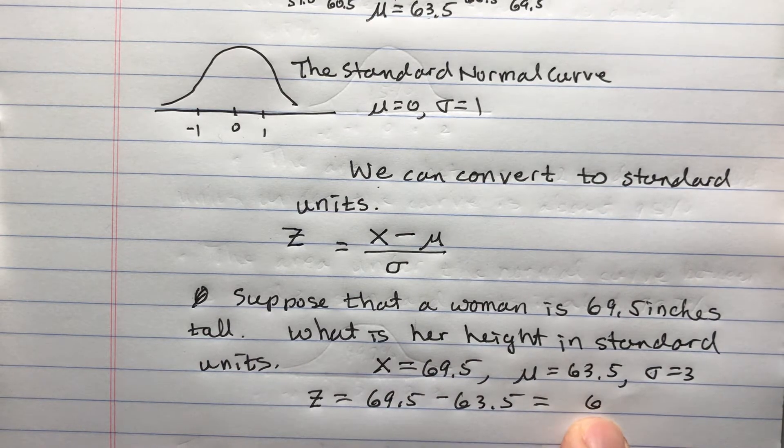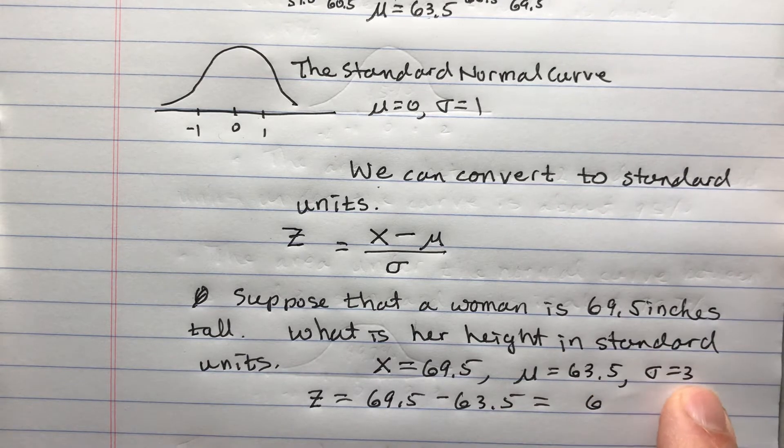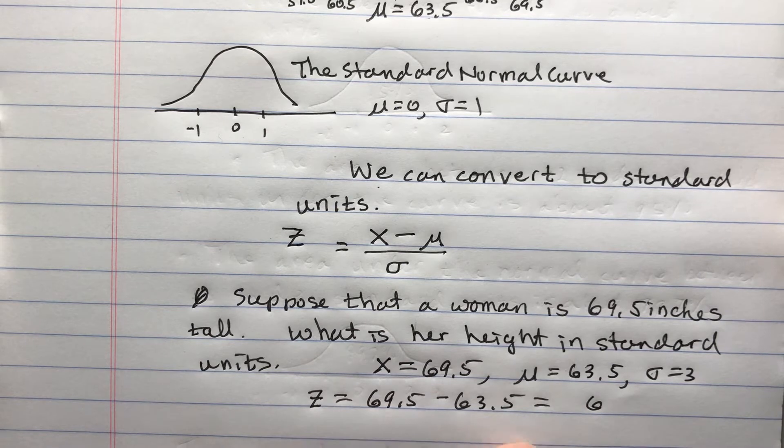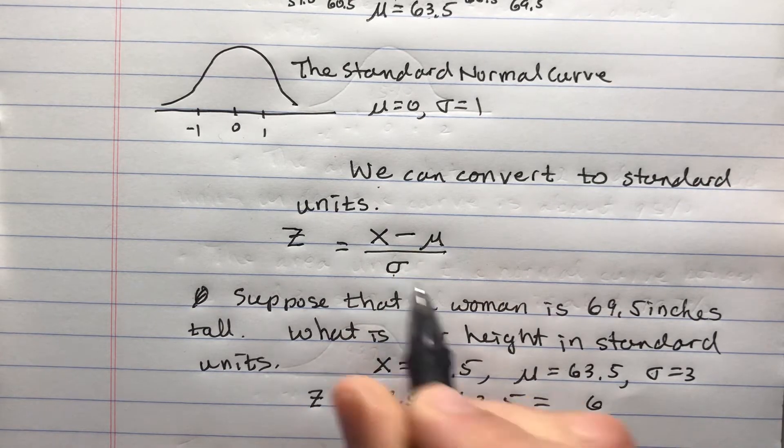The question is, how many standard deviations is that? Well, 3 goes 2 times into 6. So she's 2 standard units above the average. That's why we divide by this 3, sigma here.